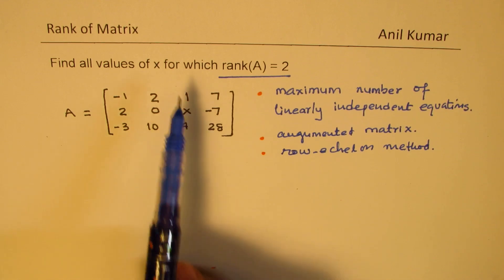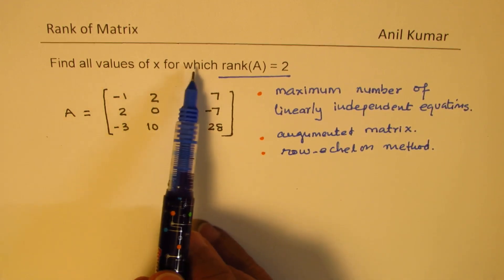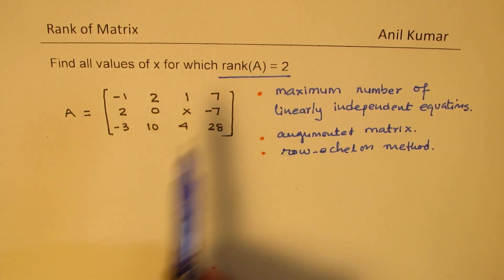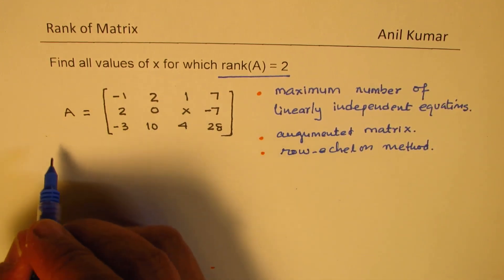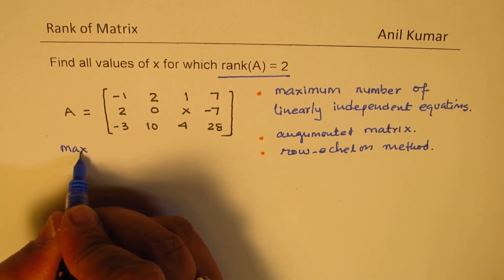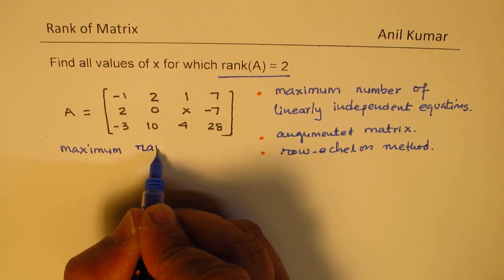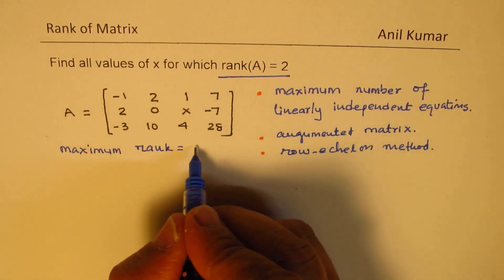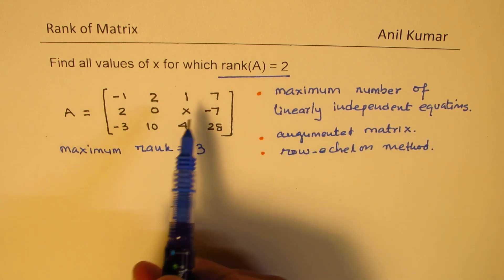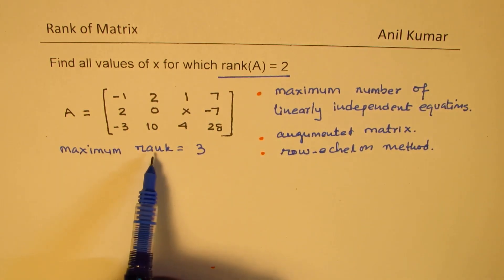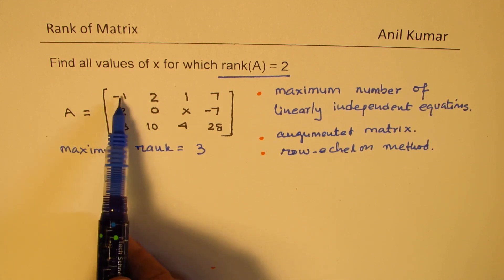Here, we want to actually find all values of x for which rank is 2. In this, as you can see, maximum rank would be 3. For any value of x, except for some which we are going to find, maximum rank is 3. We know the first row and the third row, they are independent.